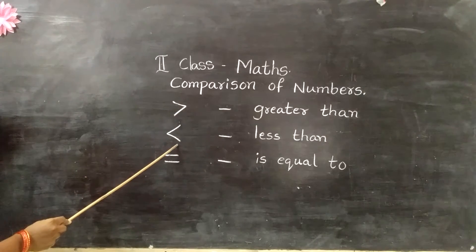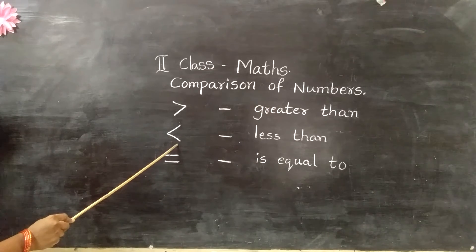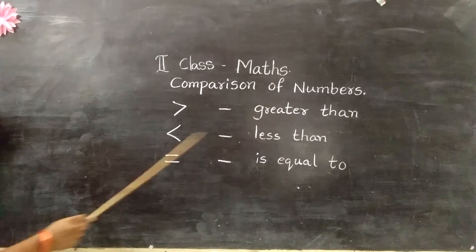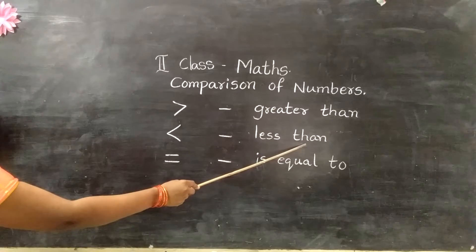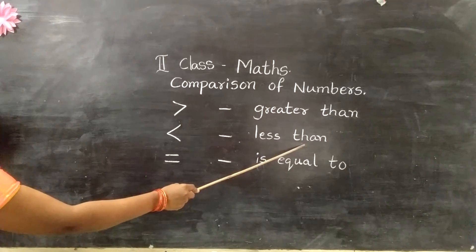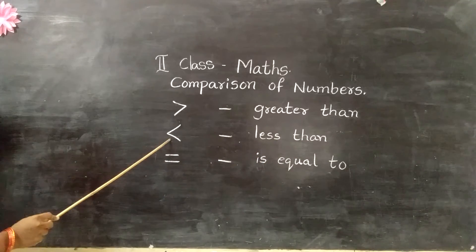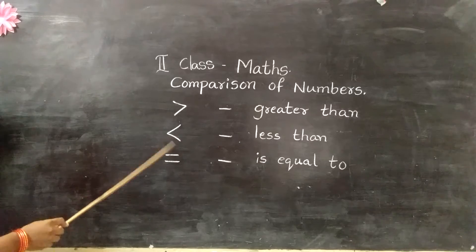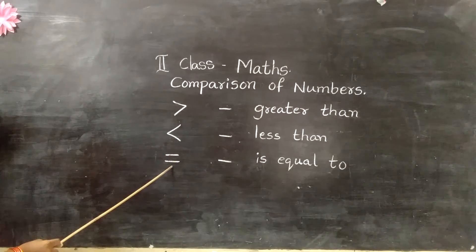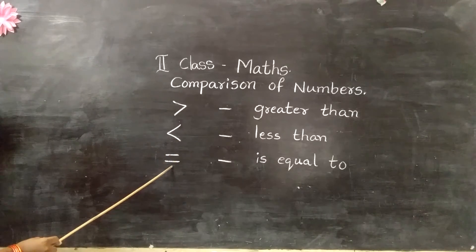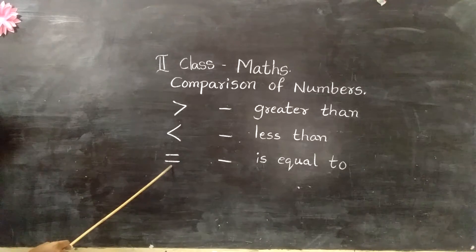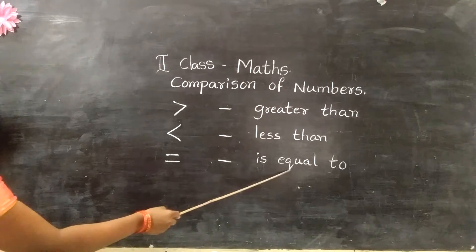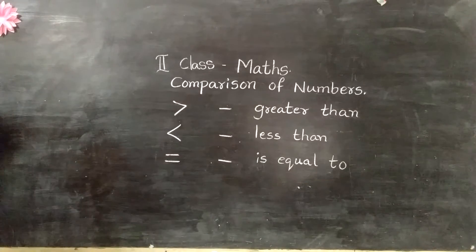This is the less than symbol — L-E-S-S, T-H-A-N, less than. And as it is, is equal to. This is the is equal to symbol.